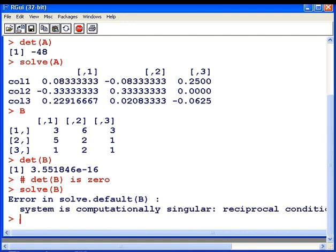Because if you recall, if the determinant of a matrix is zero, that means that no inverse of that matrix exists.